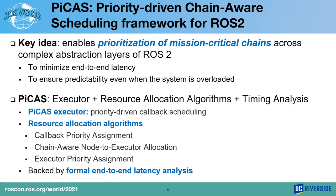We propose a new real-time scheduling and analysis framework. The key idea is that our approach prioritizes mission-critical chains across the complex abstraction layers of ROS2. By doing so, PICAS can minimize the end-to-end latency of critical chains and also ensures predictability even when the system is overloaded. The PICAS framework consists of its own executor, a resource allocation algorithm, and a timing analysis tool. Within the PICAS executor, callbacks are scheduled based on their priorities in a non-preemptive manner. The priority of callbacks and executors are determined by the PICAS resource allocation algorithm, and the timing analysis tool captures the upper bound of end-to-end latency of a chain.